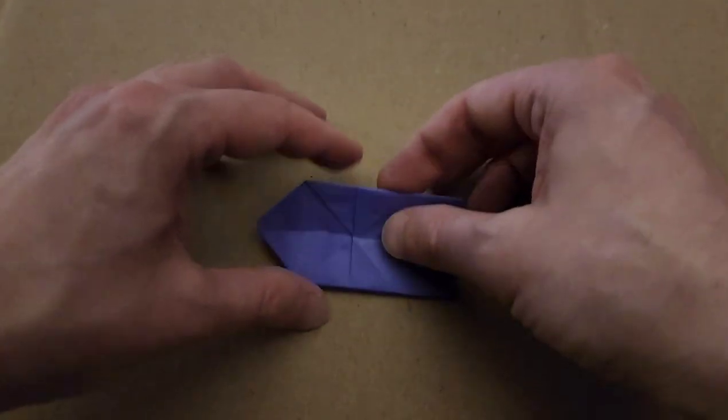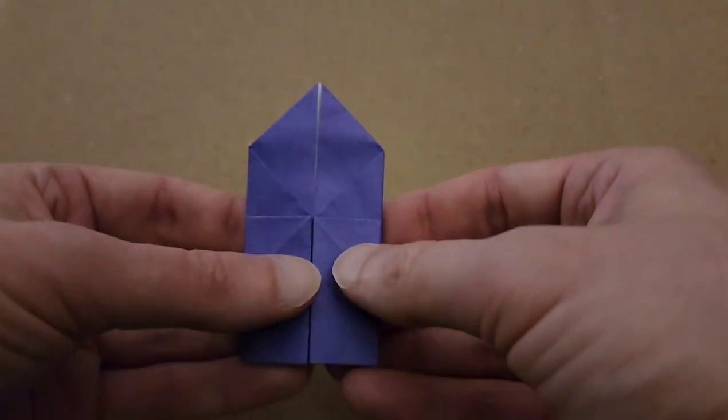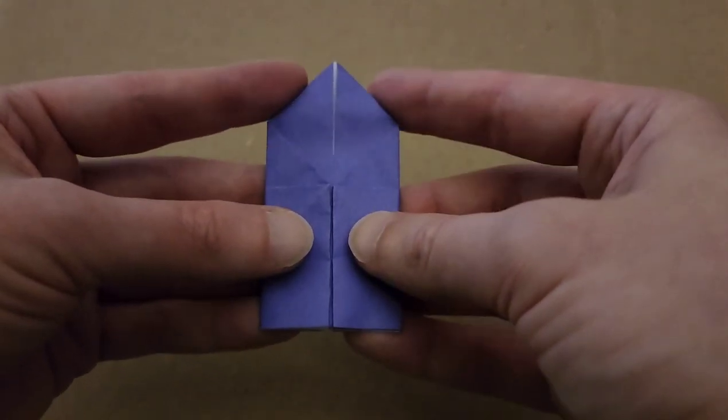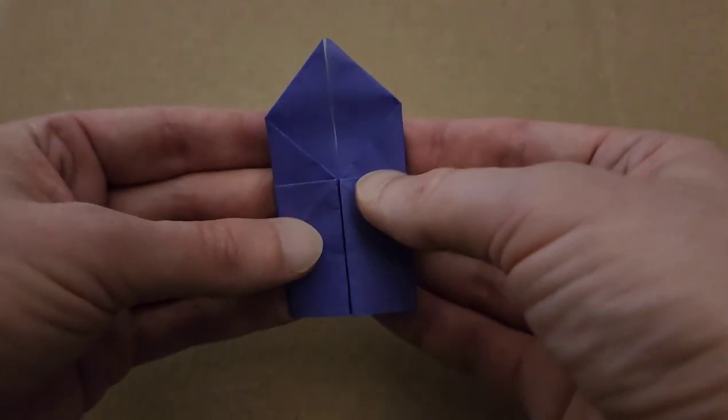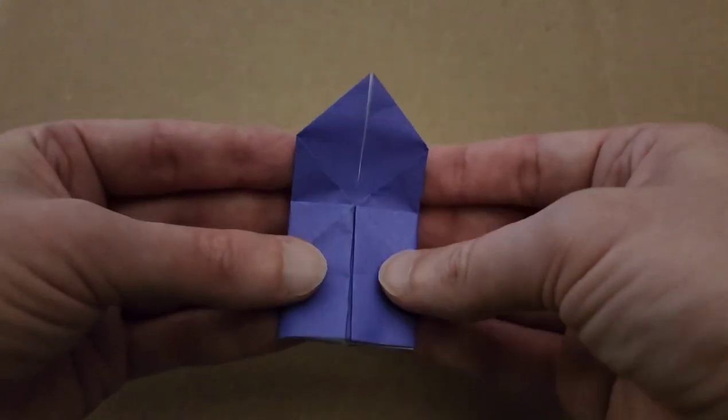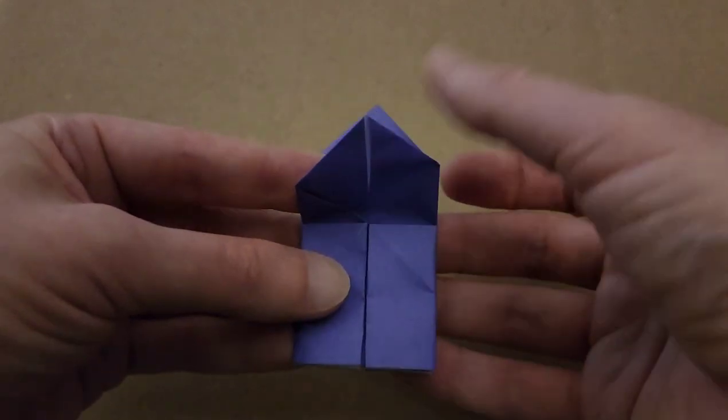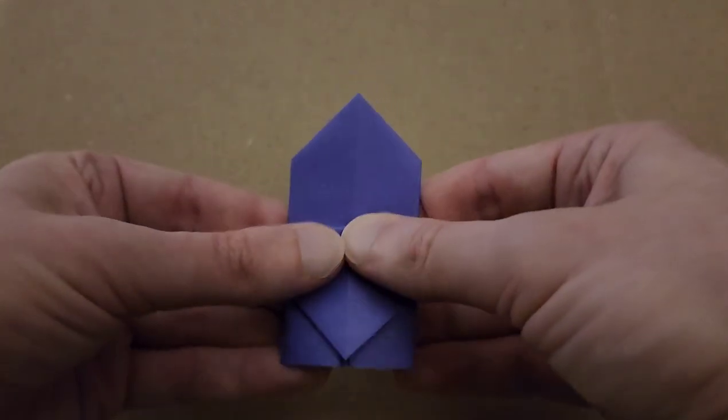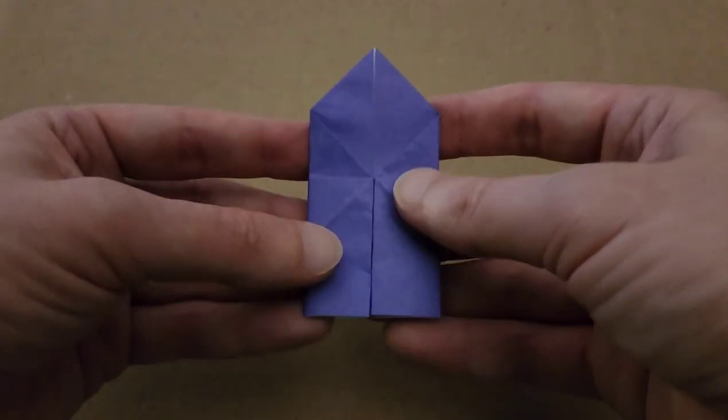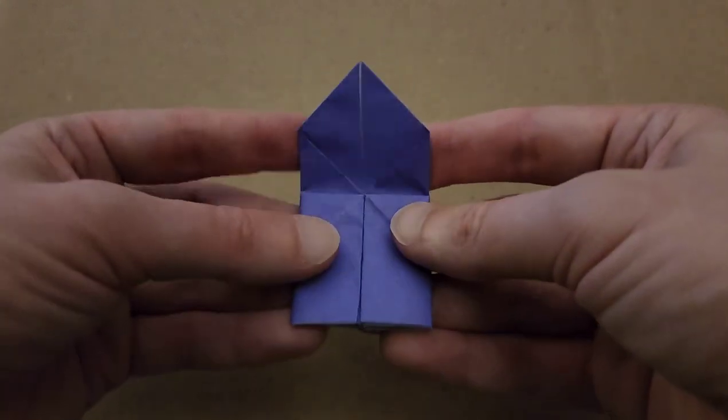There we go. So now for, well, the second to last step. You know, I kind of misspoke myself. So basically along this line right here, fold down this flap. Turn it over and then fold along this line, the second flap.